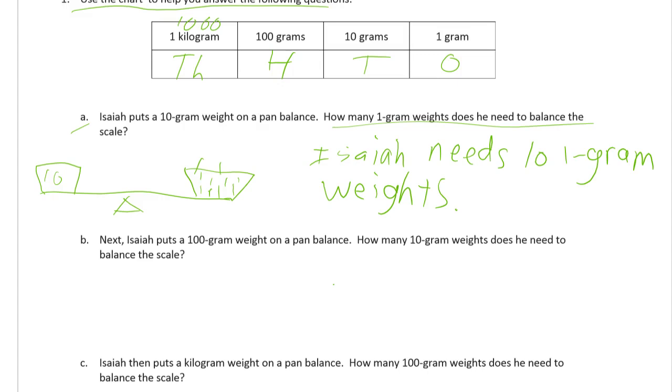Well, it takes 10 tens to make 100, so you could write 10 tens, or better to write it this way. Write it in the unit form. 10 tens equals 1 hundred. So Isaiah needs 10, let's write the word 10. 10 gram weights.